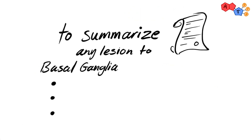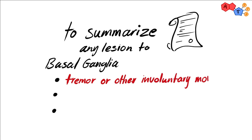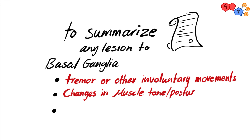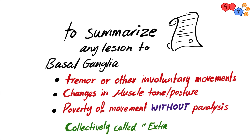In summary, any lesion in the basal ganglia may result in one of three consequences: first, tremor or other involuntary movements; second, changes in muscle tone or posture; third, poverty of movement without paralysis. These symptoms are collectively known as extrapyramidal symptoms or extrapyramidal syndromes.